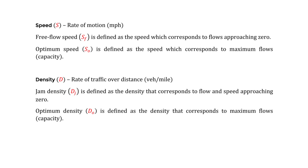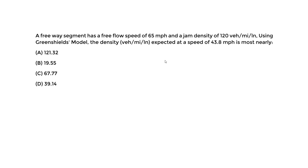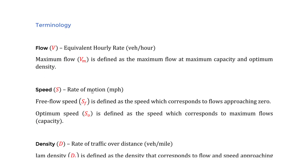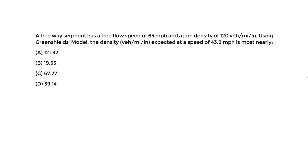Now we'll use the first figure from the handbook — specifically the linear speed versus density relationship — to solve the example. A freeway segment has a free flow speed SF of 65 miles per hour. Make sure units are in miles per hour when working with the Greenshield model in the US.